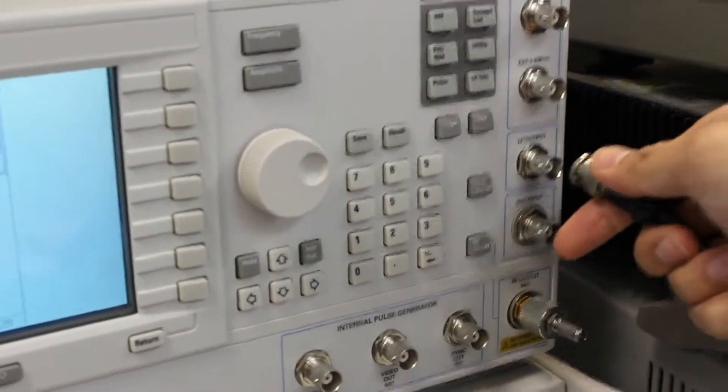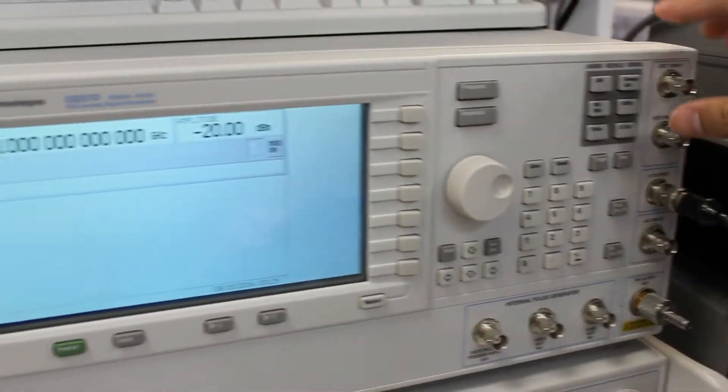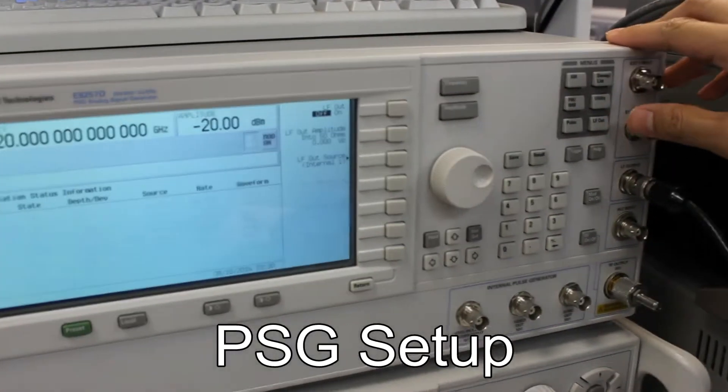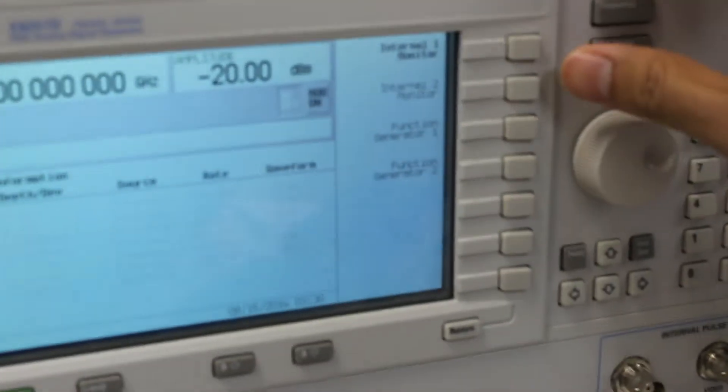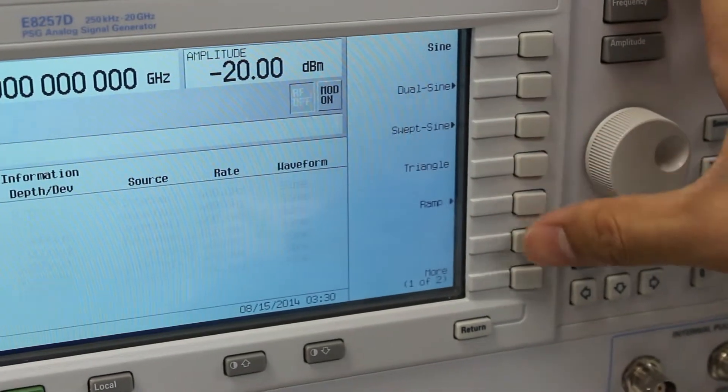The V-tune cable will connect to LF output. On the PSG, select LF output, then select LF output source. Make sure Function Generator 1 is selected. Then select LF Out Waveform.